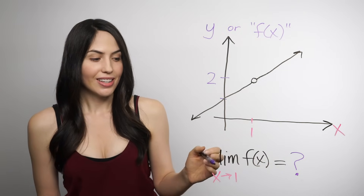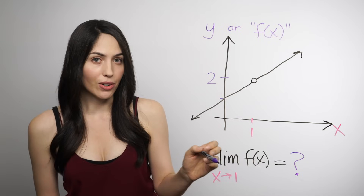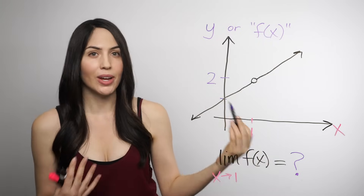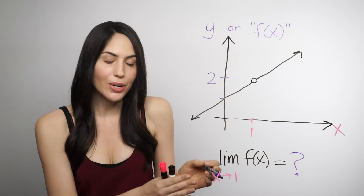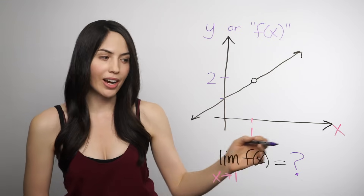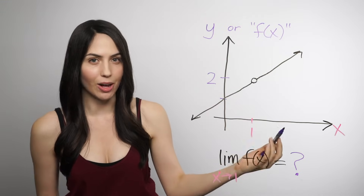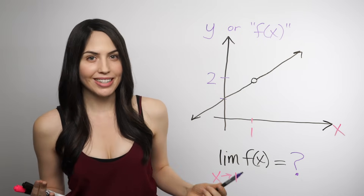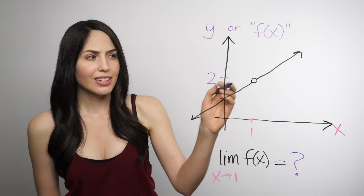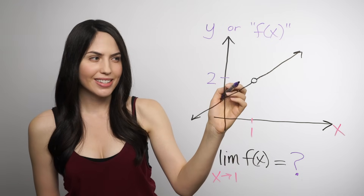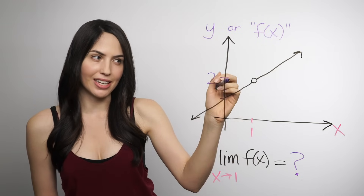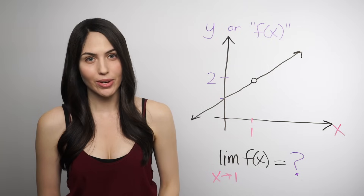In other words, as x tends toward 1 or heads toward 1, what is y tending toward or heading toward? Another way of thinking of it is: if we put in input x's really close to 1, what kind of y's are we getting out as output? Why do we even need the limit? One reason is cases like this where we can't see what's actually happening exactly at a point — we can only see what's happening around that point.